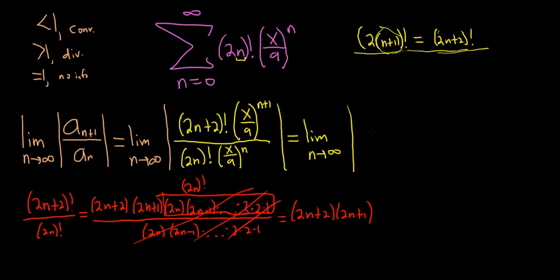So that's what goes up top. So we have 2n plus 2, and then 2n plus 1. And then we have to deal with these.